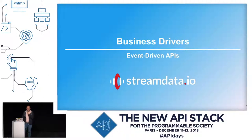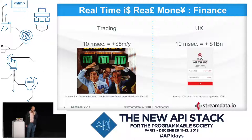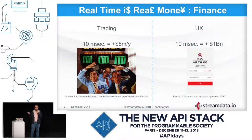Why event-driven APIs? What are the business drivers? In the financial industry, real-time is real money. Latency is very important when you trade. If you shave 10 milliseconds for an average broker, you can actually make $8 million a year additional — that's significant real money. On the retail banking side, for a large bank like ICBC — the largest — 10 milliseconds on their UX would bring them $1 billion.